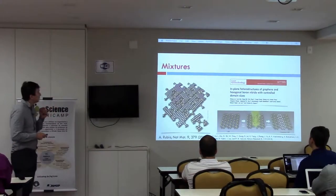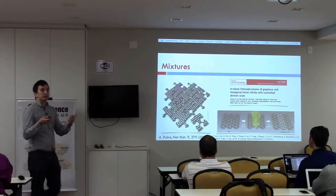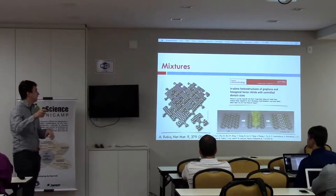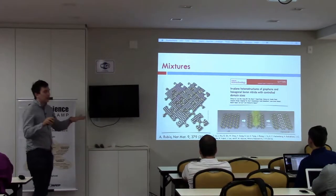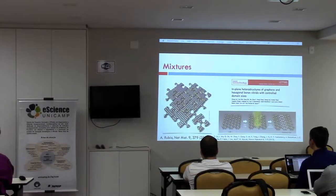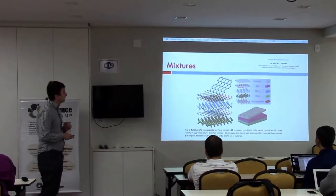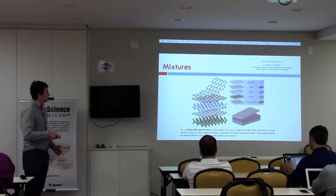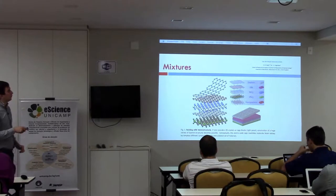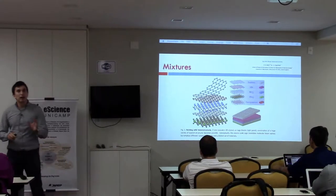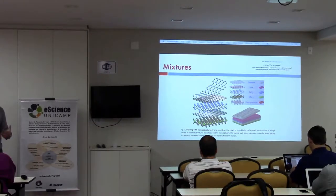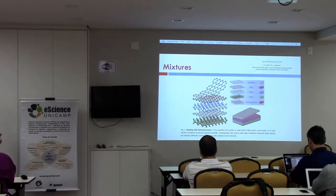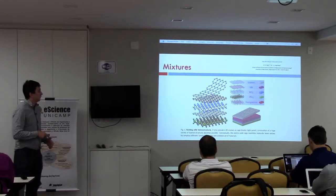How can you do it? You can make mixtures in-plane, like a puzzle. You can take graphene and BN, or graphene and molybdenum disulfide, and make this kind of puzzle and tune the specific properties. Or you can make Legos — you can mix the planes and assemble them to make Van der Waals heterostructures.